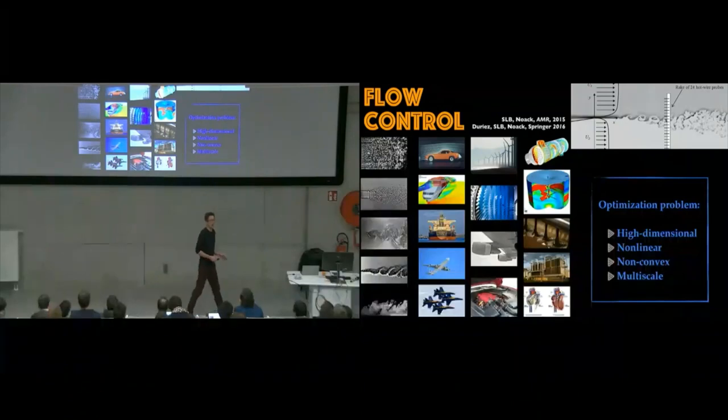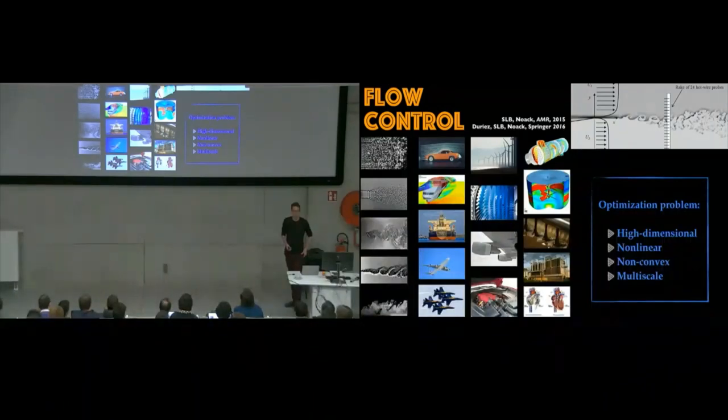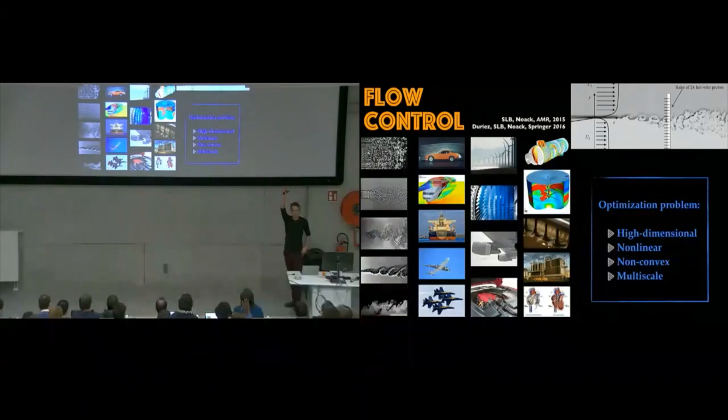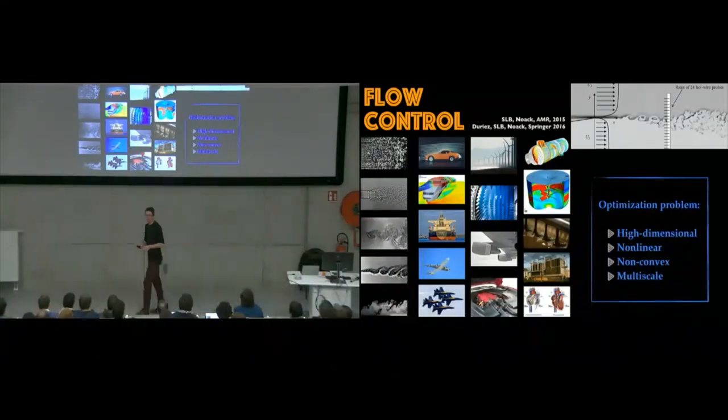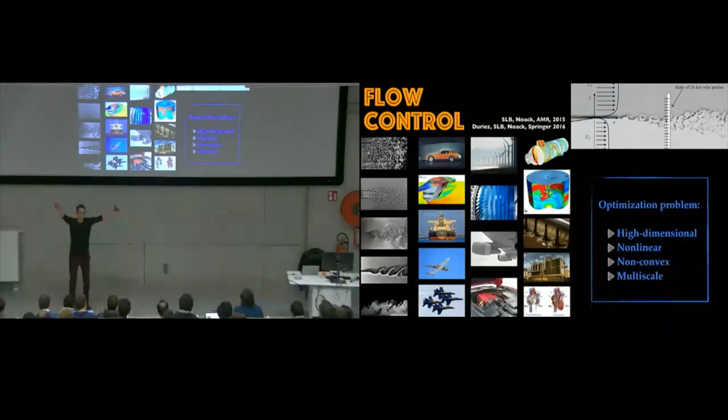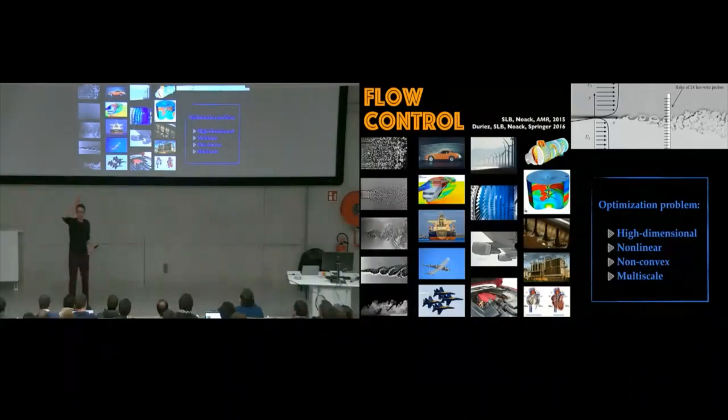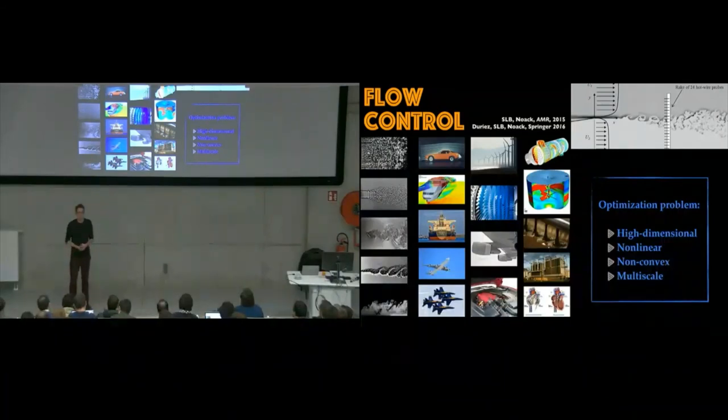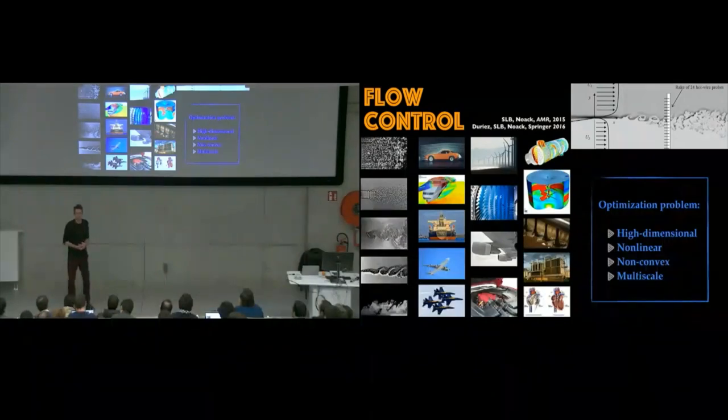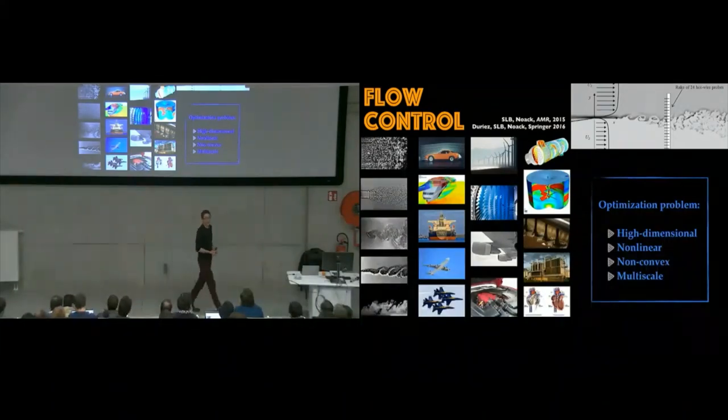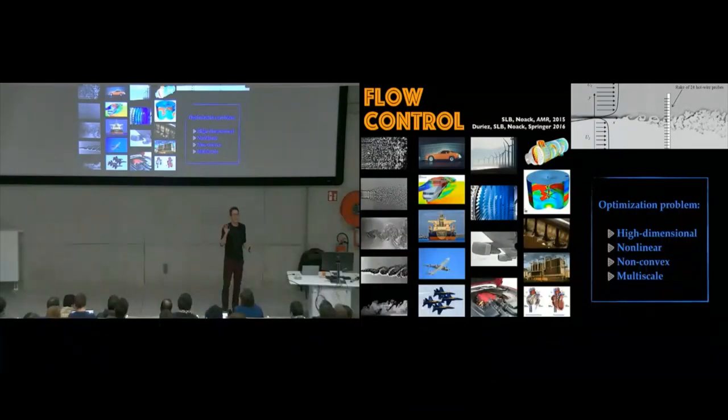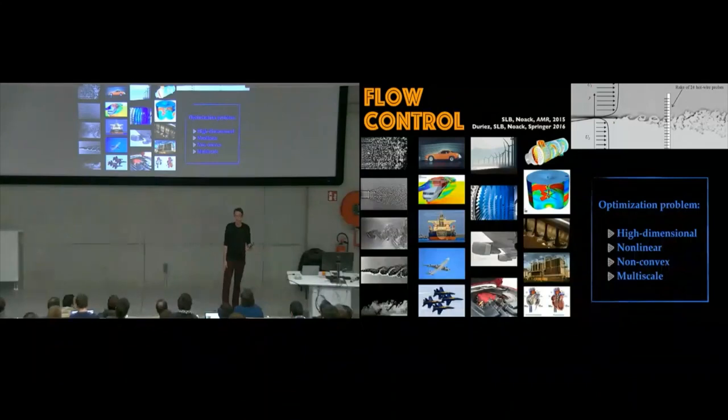Flow control is a really hard optimization problem. When I say that we have a non-convex optimization problem, does everyone know what that means? A convex optimization problem is easy. It's where there is a smooth mountain with one hump, and all you're trying to do is walk to the top. What's the steepest approach to the top of a mountain? You compute the gradient and you go in that direction.